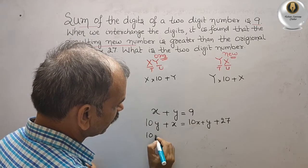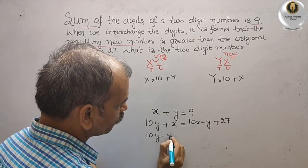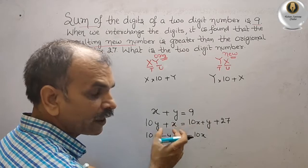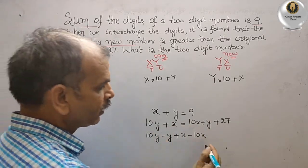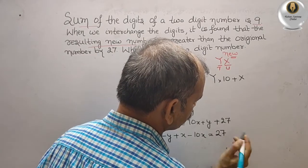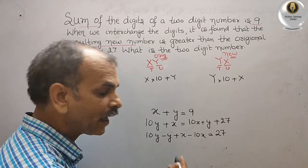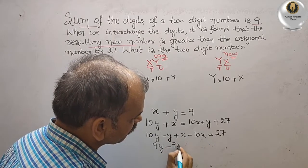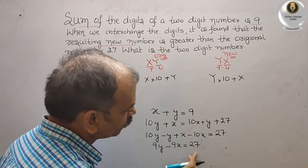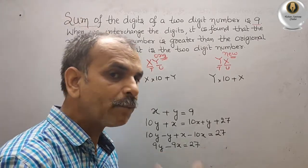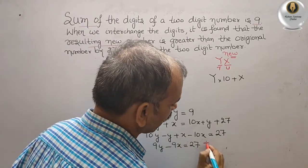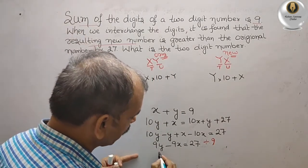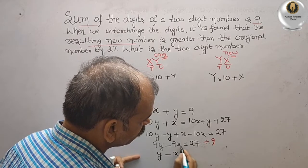Rearranging, we get 10Y minus Y plus X minus 10X equals 27, which simplifies to 9Y minus 9X equals 27. Since the coefficients are multiples of 9, we divide by 9, giving us y minus x equals 3. So we now have two equations.